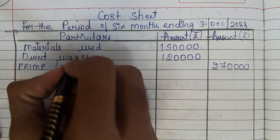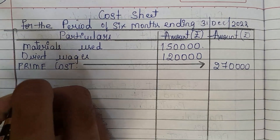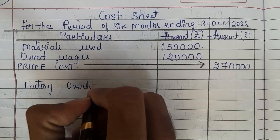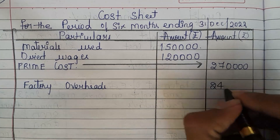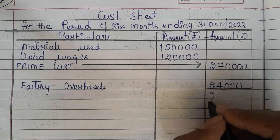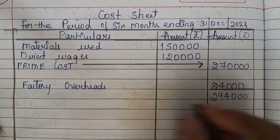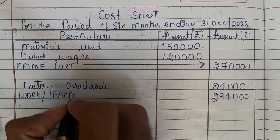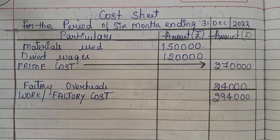2,70,000 is known as prime cost. To this prime cost we need to add factory overheads. Factory overheads are 24,000. Add 24,000 to 2,70,000 and we will get 2,94,000. This 2,94,000 is work cost, or we can call it factory cost.